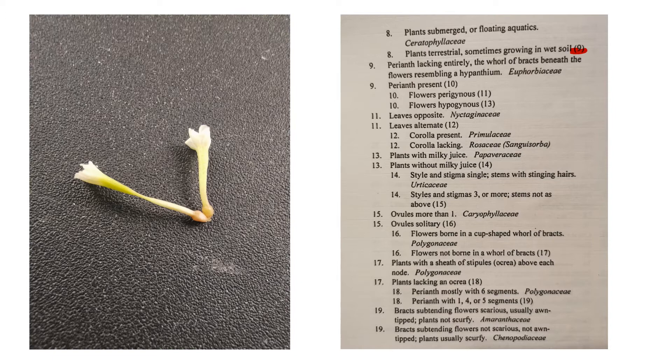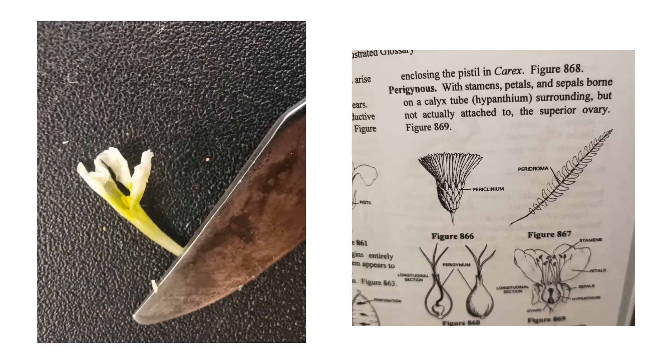And so we go to nine and on nine it says perianth lacking entirely the whorl of bracts beneath the flowers or resembling a hypanthium. And this is not the case. There is a perianth present and then we're going to move. So we're going to move to 10 and it's asking if the flowers are perigynous or hypogynous. And we're going to look up the first one, this word right here, and see what that looks like. Okay. So we're going to come here and see what perigynous means. And that's with stamens, petals and sepals borne on a calyx tube surrounding but not actually attached to the superior ovary. And we're going to look more closely at it, but this is the case.